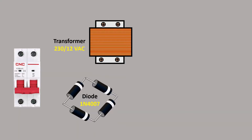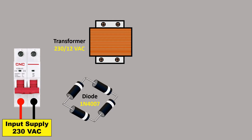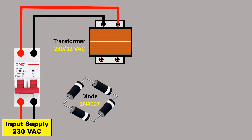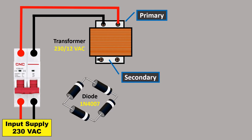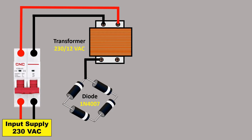Here I have an MCB and I am connecting it directly with the 230 volt AC power supply, meaning you have to provide input power supply to this MCB. From the output terminal of the MCB, connect the power supply to the primary side of the transformer. From the secondary side of the transformer, take the neutral supply and connect it to the cathode terminal, and connect the other wire from the secondary side to the bridge rectifier diode.